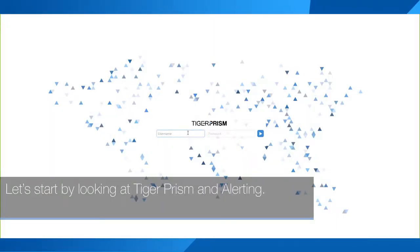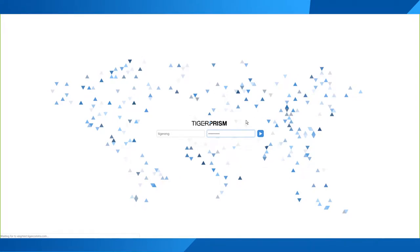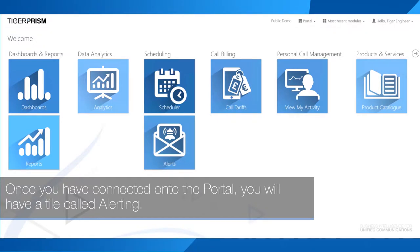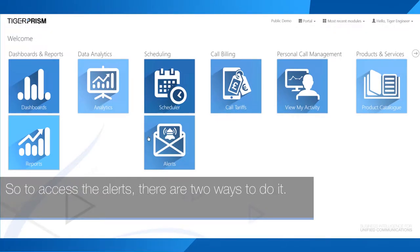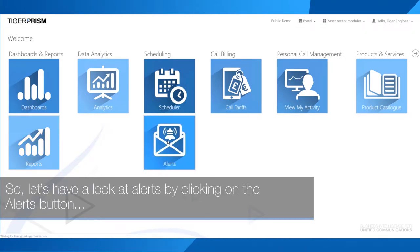Let's start by looking at Tiger Prism and alerting. To access the portal it will be the same as normal, logging in with your username and password. Once connected, you will have a tile called alerting. To access the alerts there are two ways: you can go through the alerts tile or through the analytics tile as well.